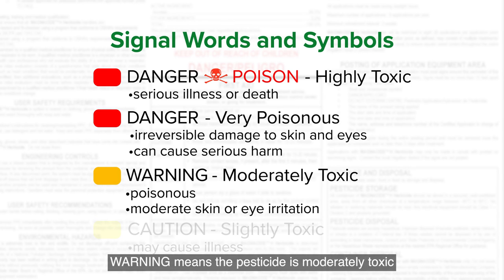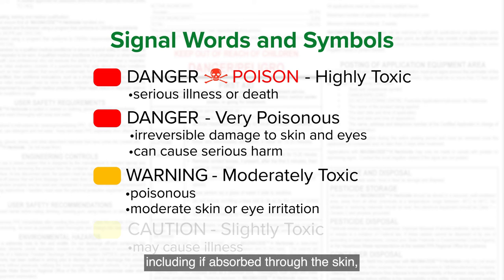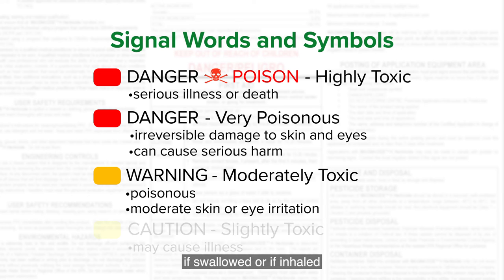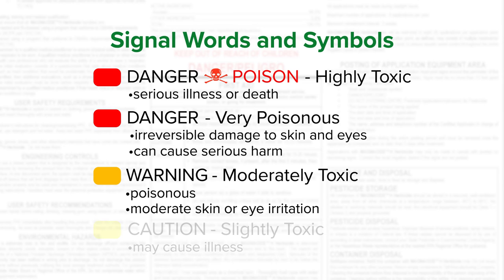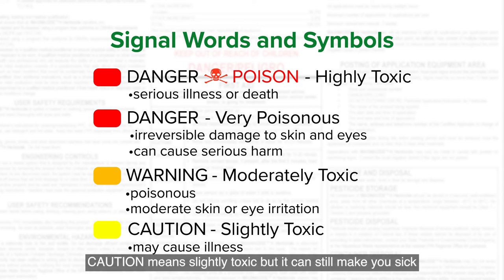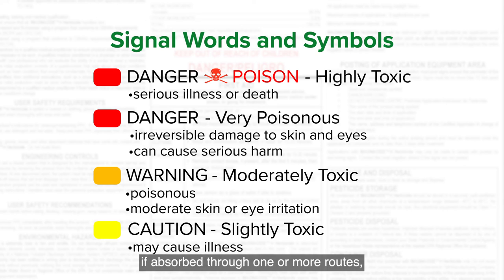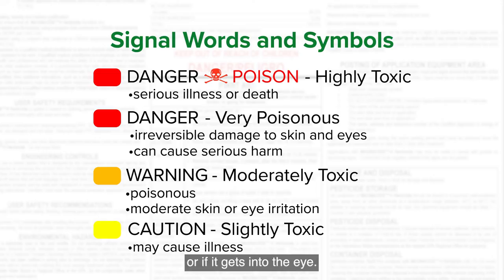WARNING means the pesticide is moderately toxic or poisonous through one or more routes, including if absorbed through the skin, if swallowed, or if inhaled, or causes moderate eye or skin irritation. CAUTION means slightly toxic, but it can still make you sick if absorbed through one or more routes, including by the skin, if inhaled, or if it gets into the eye.